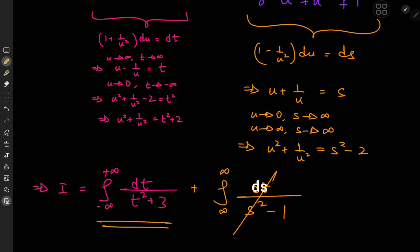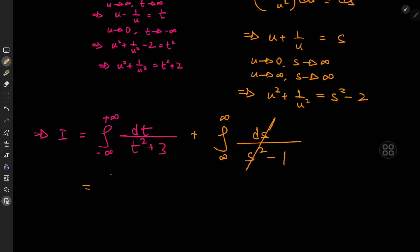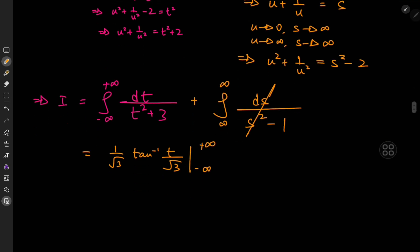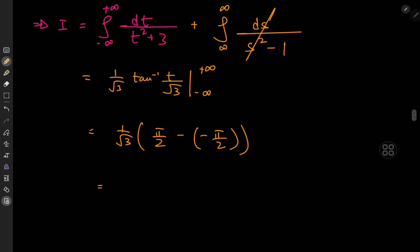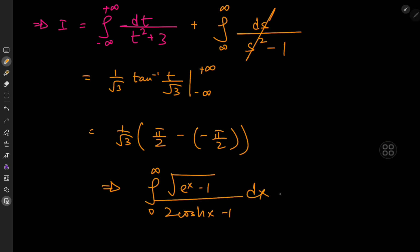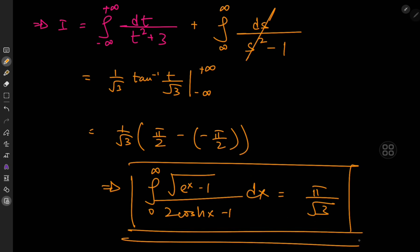So we have this simple inverse tangent integral to evaluate. The result is 1 over root 3 times arctan of t over root 3, evaluated from negative infinity to positive infinity. As the argument tends to infinity, arctan tends to pi over 2, and for negative infinity it's negative pi over 2, giving pi over 2 minus negative pi over 2 which equals pi. Therefore the integral from 0 to infinity of root e to the x minus 1 divided by 2 cosh of x minus 1 dx equals pi divided by root 3 — a very cute result.